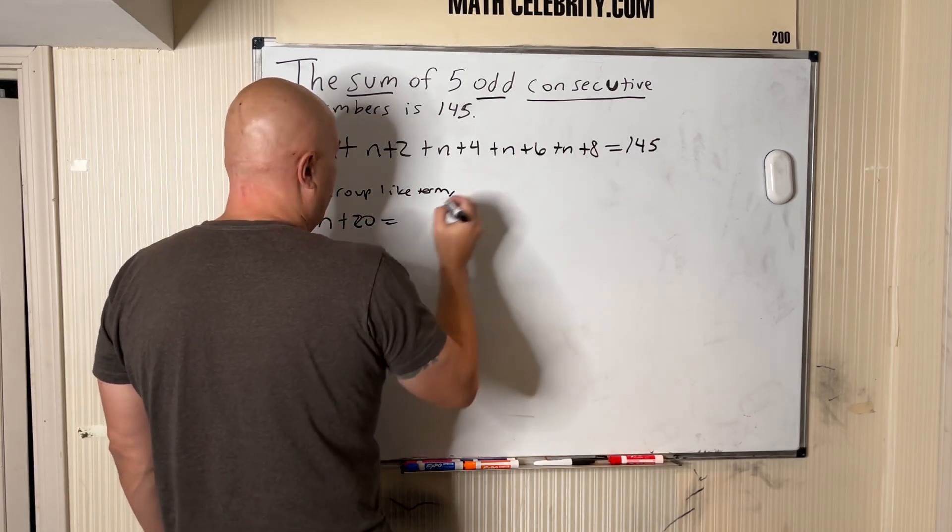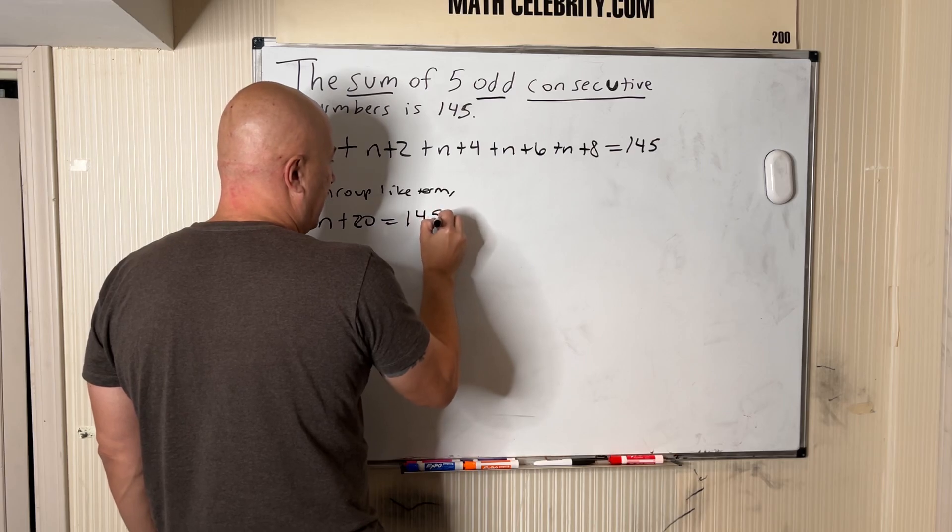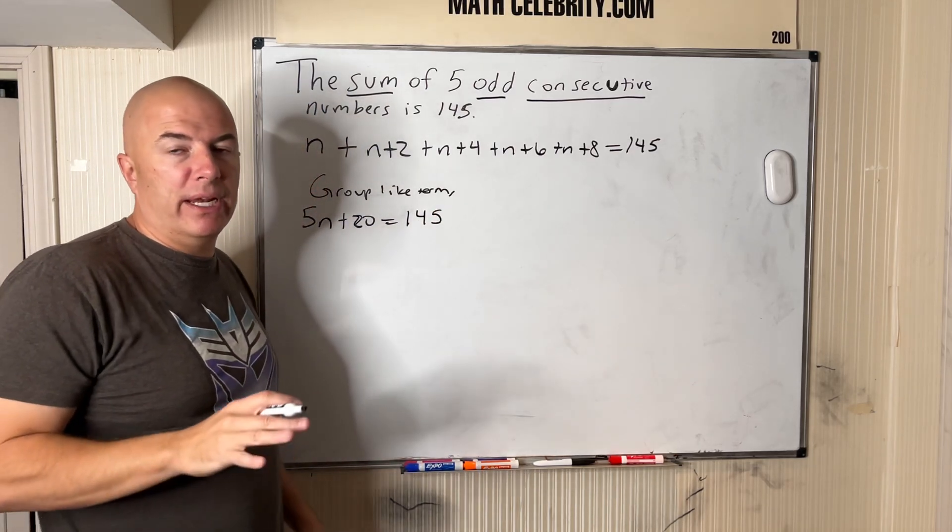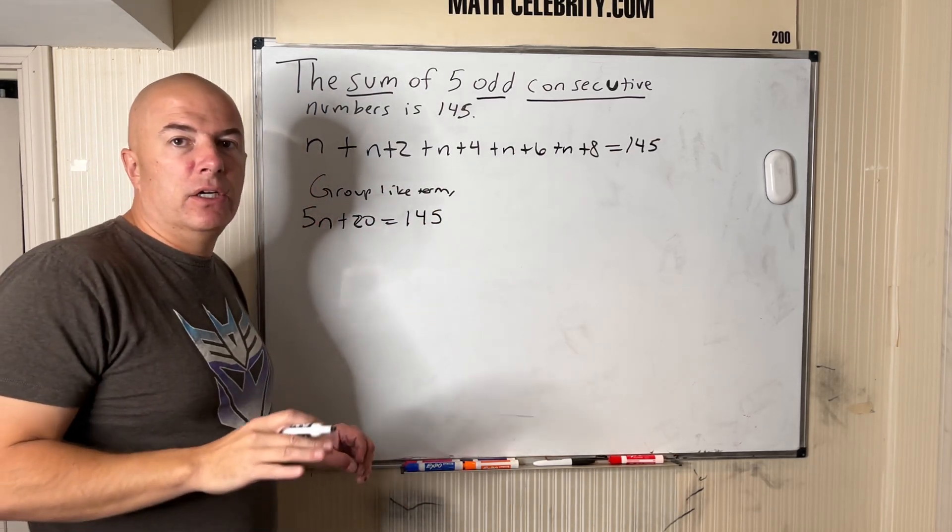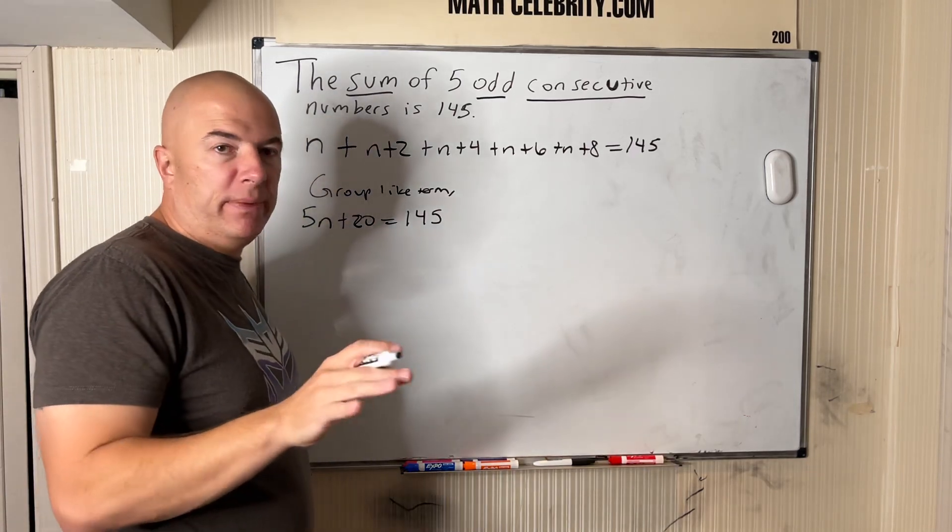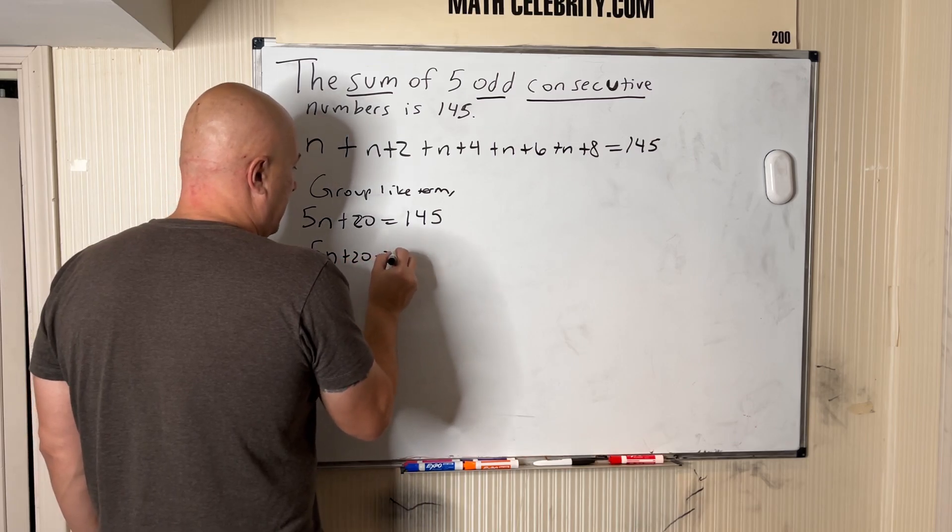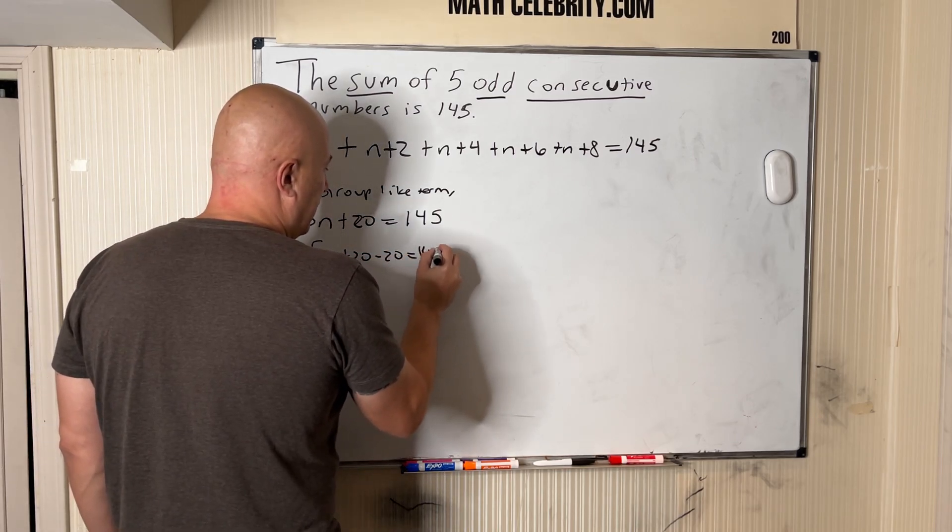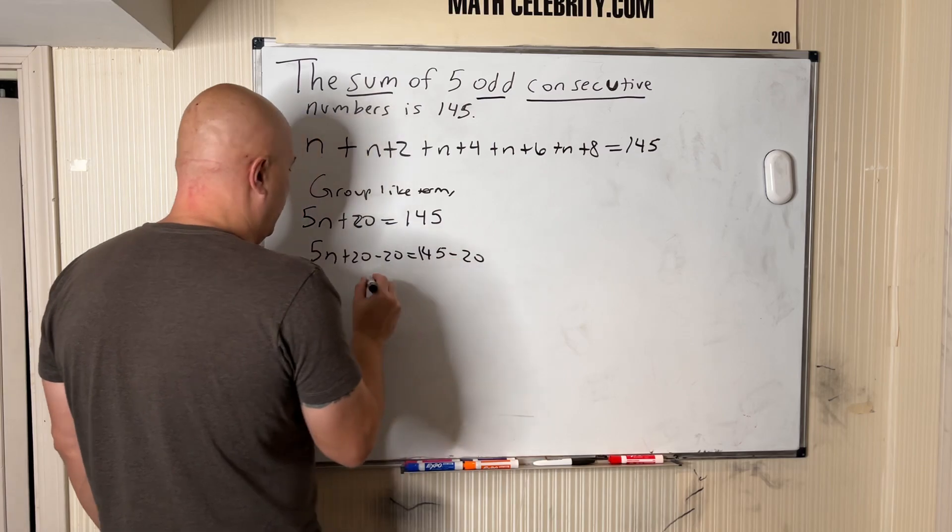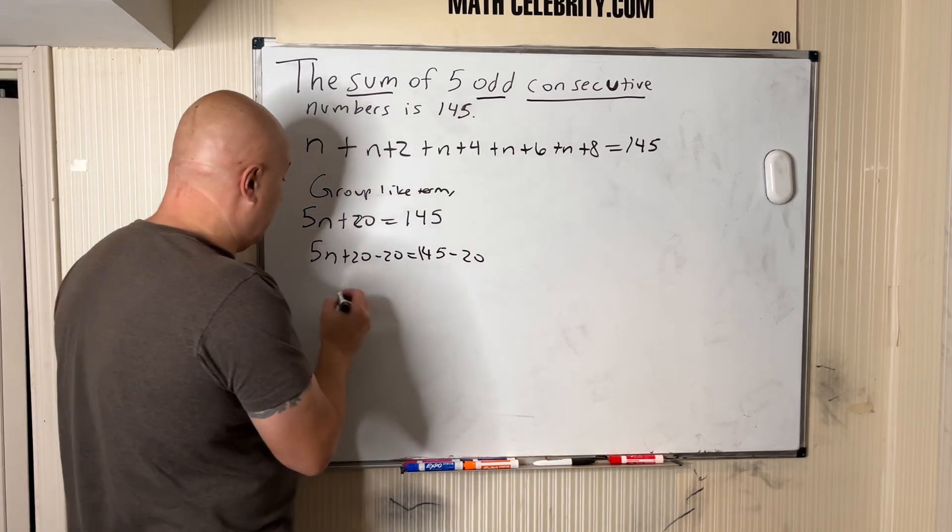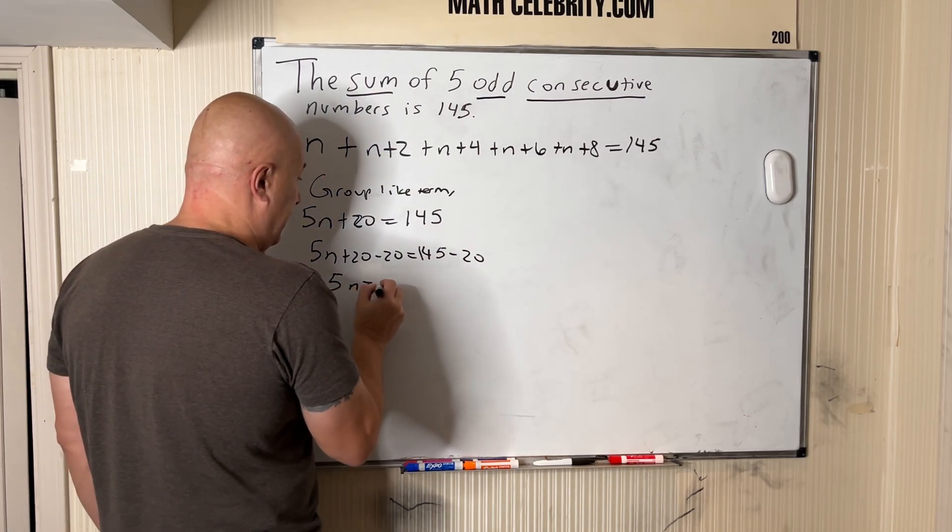And then we set that all equal to 145. Now we're getting somewhere, we're getting close. We got a nice clean two-step equation. We're going to subtract 20 from each side, so we have 5n plus 20 minus 20 equals 145 minus 20. These 20s cancel and we have 5n equals 125.